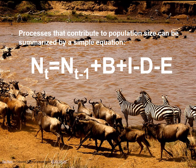The equation summarizes four different processes. N sub t is the number of individuals at time t, dependent on N sub t-minus-one — the previous time step. We add births (B) and immigrants (I), which are both positive, then subtract deaths (D) and emigrants (E), which are both negative. So B and I increase the population while D and E decrease it.